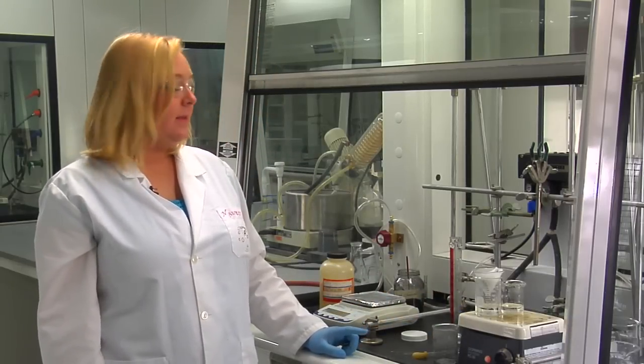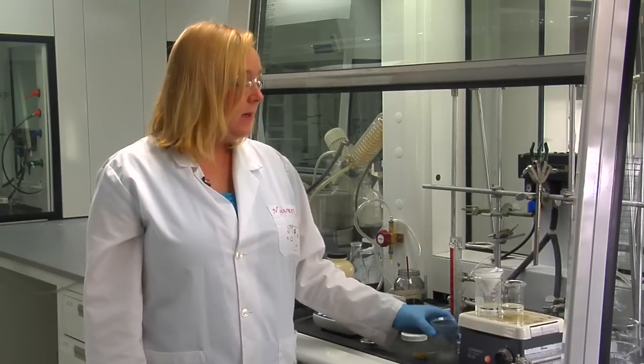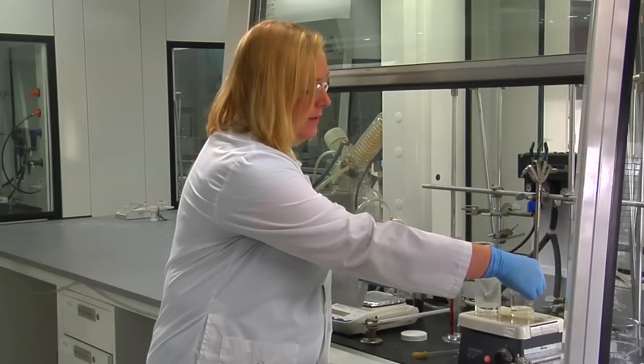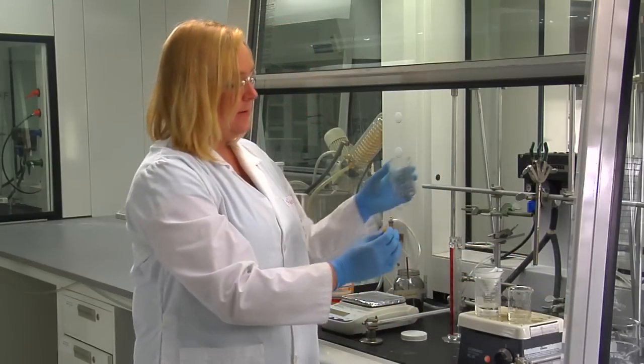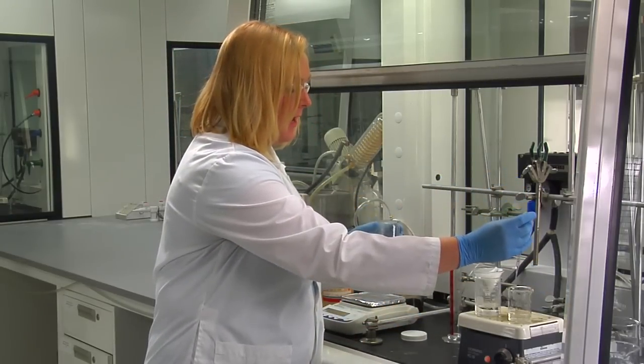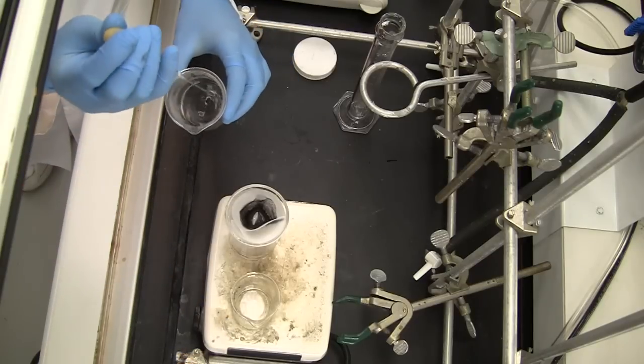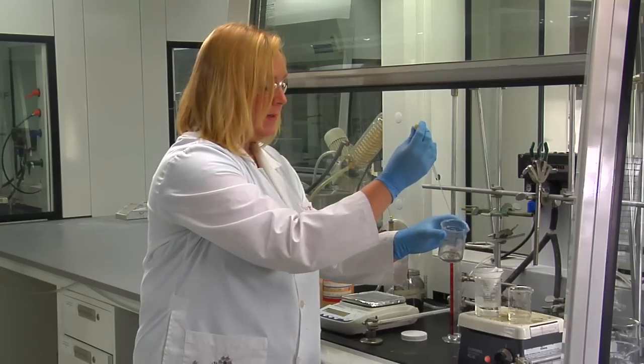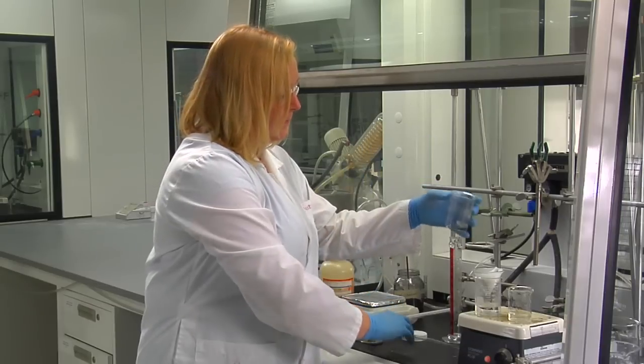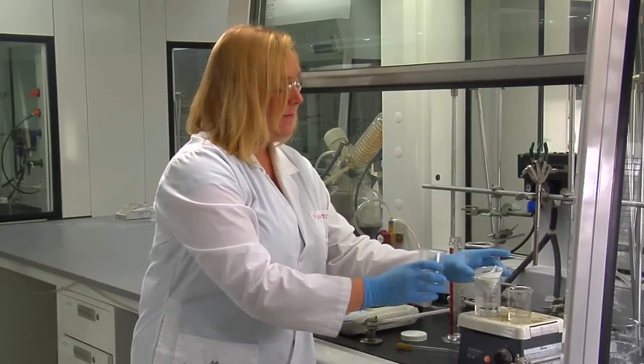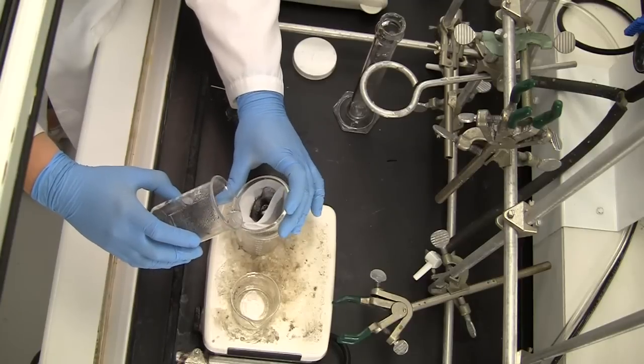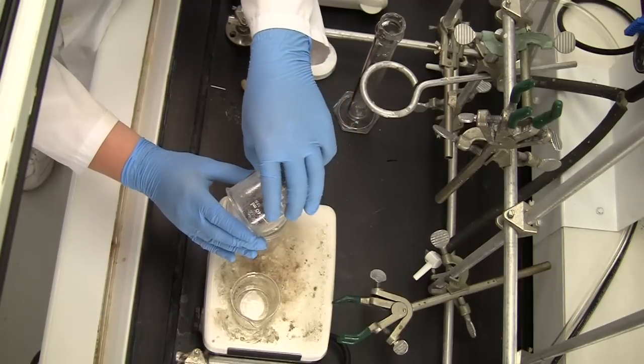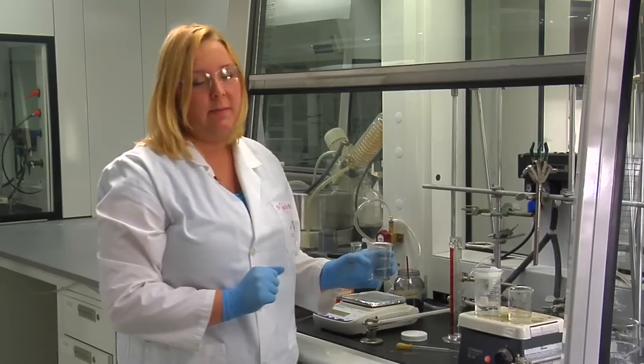Once you've filtered the entire solution through the filter paper, to ensure you get the maximum amount of salicylic acid, you can use some of your hot water still on the beaker to rinse out the original beaker and the filter paper. You can use just a few mils of hot water to rinse the beaker, and then you can put it through the funnel, rotating around, to rinse off the filter paper of any salicylic acid that may have precipitated onto the paper.